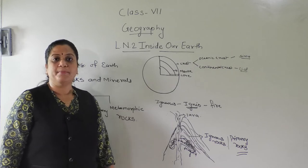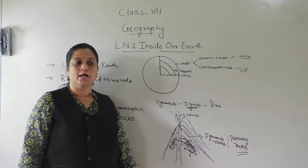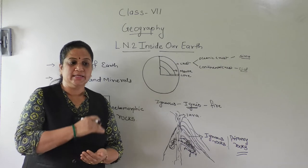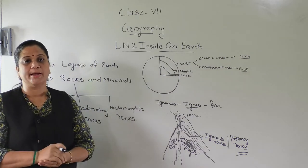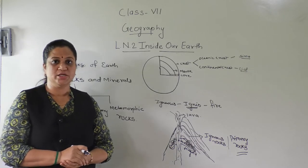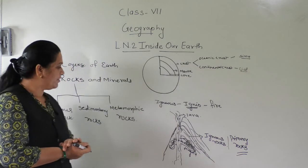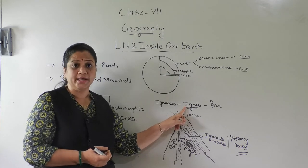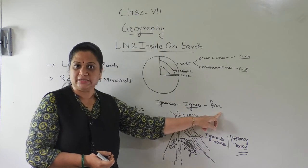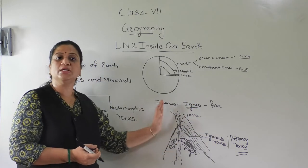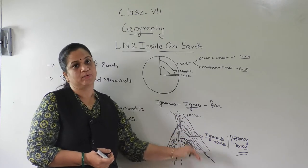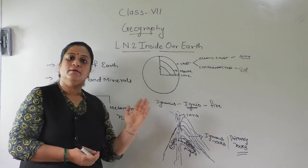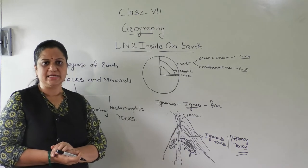An example of igneous rocks is basalt. You have studied about the physical features of India — the Deccan Plateau of India is totally made up of basalt rock. Another example is granite, which is used for flooring and kitchen platforms. So igneous rocks are of two types: extrusive igneous rocks and intrusive igneous rocks.